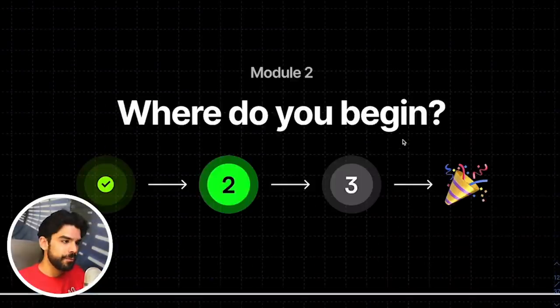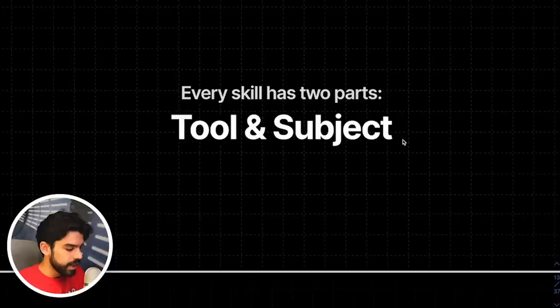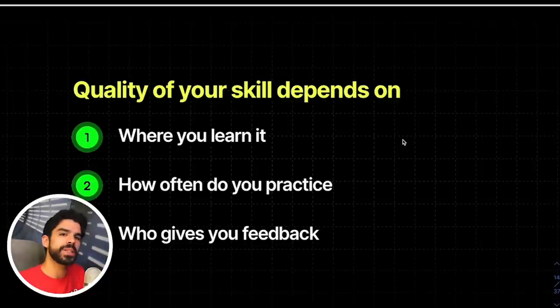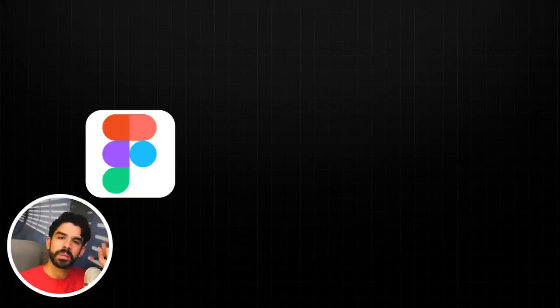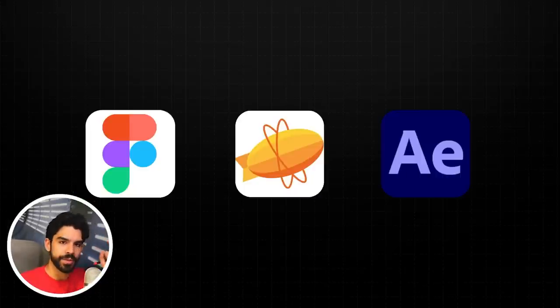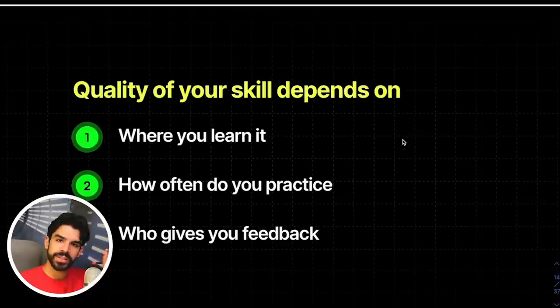Let's start with module number two. Where exactly do you even begin? Every skill has two components. One is the tool and one is the subject. And both are very important. Let's say if you're a UX designer, the tool can be Figma, Zeppelin, and Adobe After Effects. Figma for the designing, Zeppelin for the handoff, and After Effects for motion graphics and interaction design if you're into that.